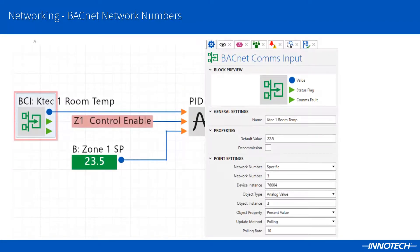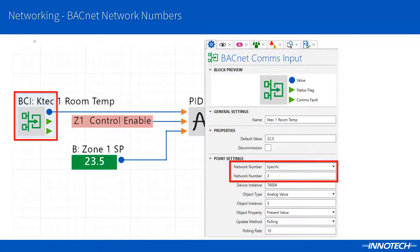During the design process, when using BACnet comms inputs or outputs, we recommend using the specific network number target. As shown in this example, I have set the BACnet comms input to read back the analog value from the BACnet MSTP device installed on network number 3. This helps to optimize and create an efficient BACnet network traffic flow. This can also be used for the BACnet comms output block to target a specific device and object on a specific network number.